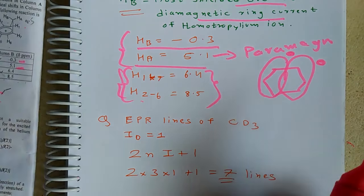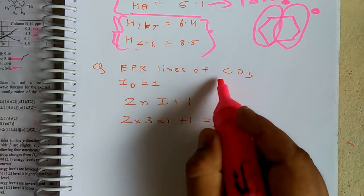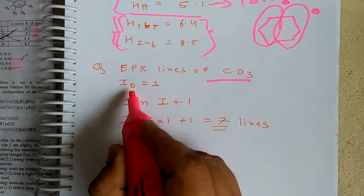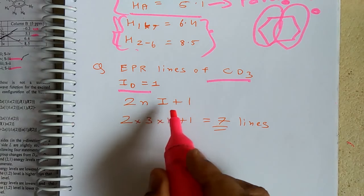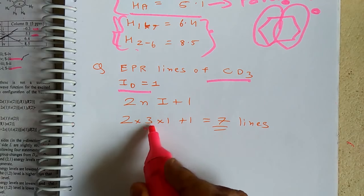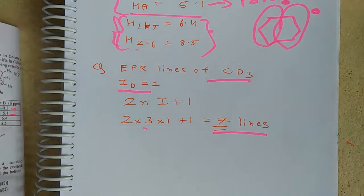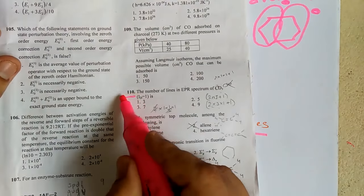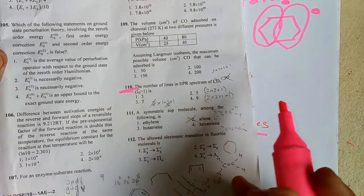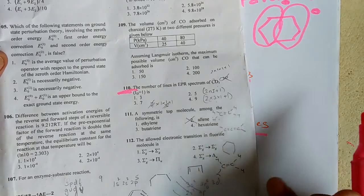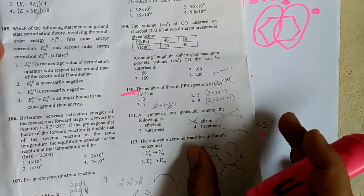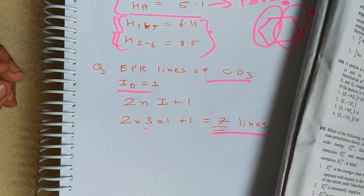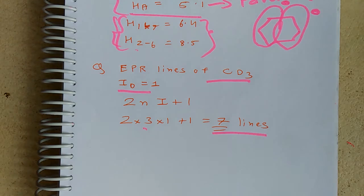The last question is about EPR lines of CD3. Deuterium has nuclear spin I = 1, so using the formula 2nI + 1, with n = 3 deuterium atoms: 2 × 3 × 1 + 1 = 7 lines. Very simple — seven EPR lines. Surprisingly, this was asked for four marks in the exam. This is a great bonus for students! With that, all organic chemistry questions from the June 2018 Part C have been covered. Please subscribe to the channel for more, and leave any questions in the comments.